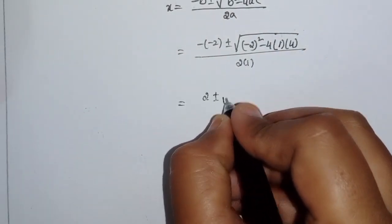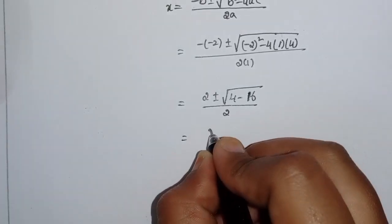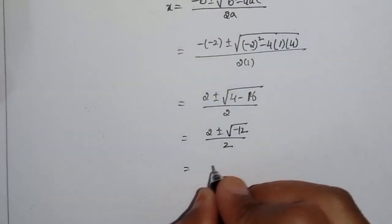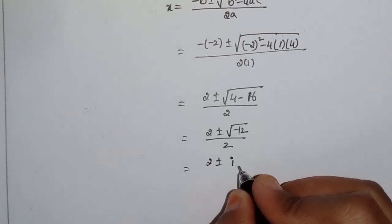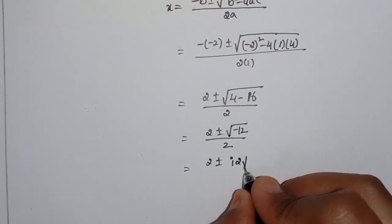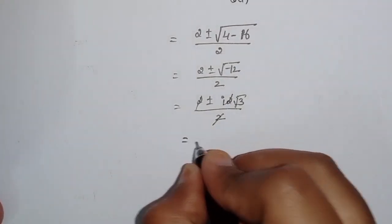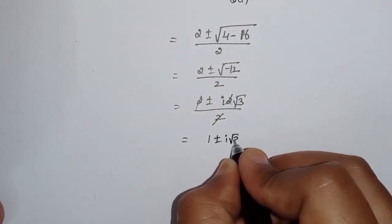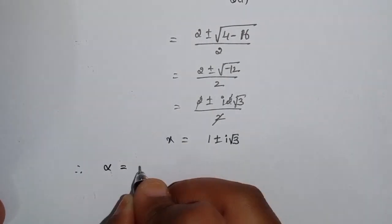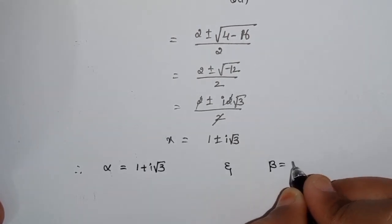That simplifies to 2 ± √(4 - 16) / 2, which is 2 ± √(-12) / 2. Now √(-12) = 2i√3, so we get 2 ± 2i√3 divided by 2, and the 2s cancel, giving us 1 ± i√3.